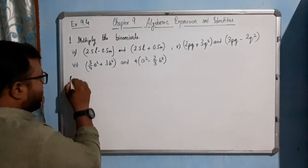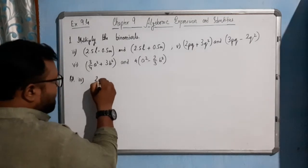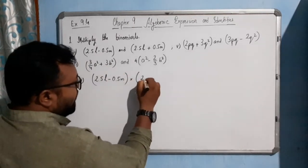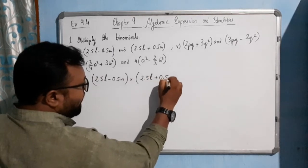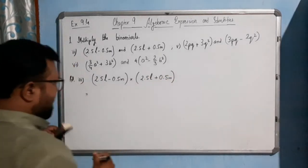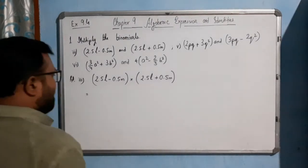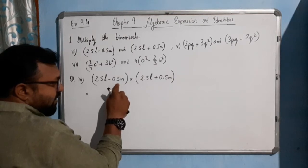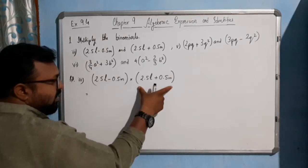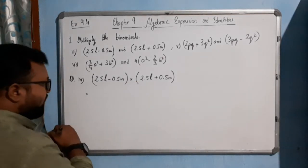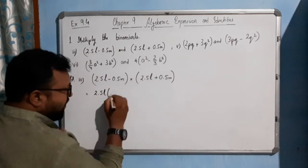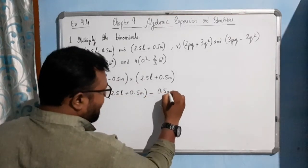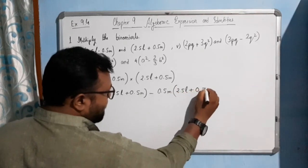First, solution 3: (2.5L minus 0.5M) multiplied by (2.5L plus 0.5M). Binomials are here — each expression having two terms. We will multiply the first term of the first expression with the second expression, and then the second term of the first expression is multiplied by the second expression. So: 2.5L multiplied by (2.5L plus 0.5M), then minus 0.5M multiplied by (2.5L plus 0.5M).